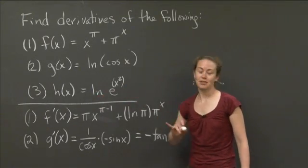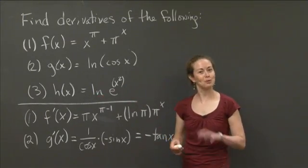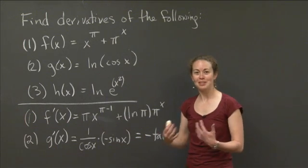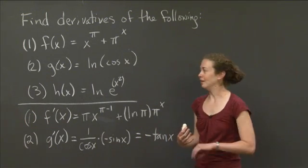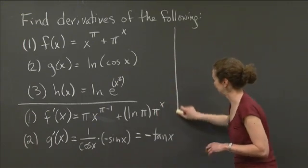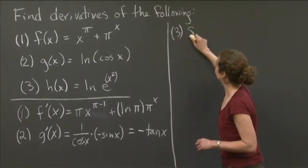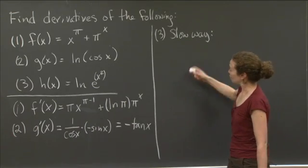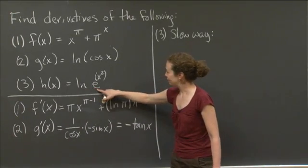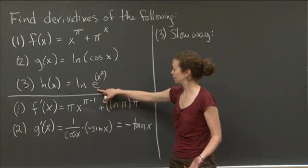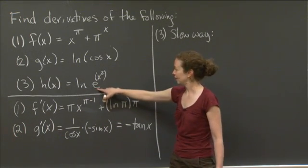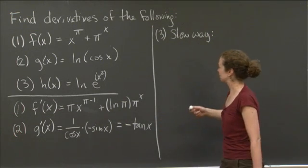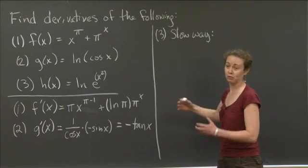For example three, I'll work it out to the right. There is a fast way and a slow way. I'll do the slow way first, to show why it's good to pull back from a problem and see how you can make it simpler. The slow way: I have a composition of functions — natural log of something, and then e to the x squared inside. So I need to use the chain rule here, working from the outside in.